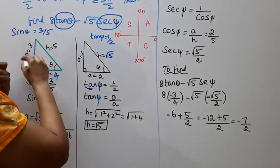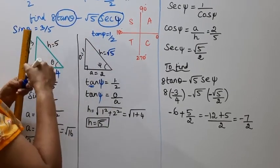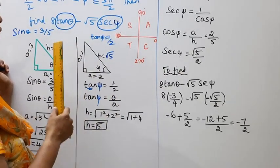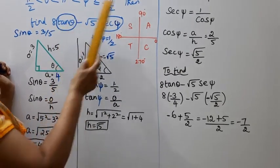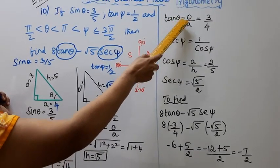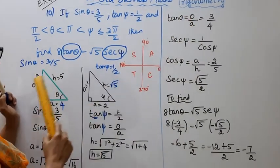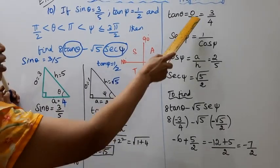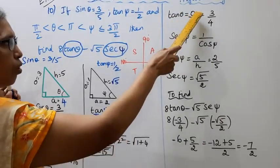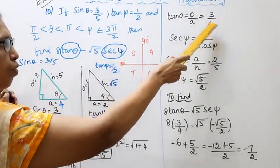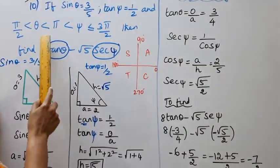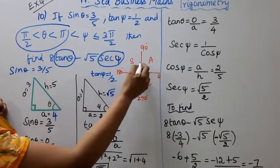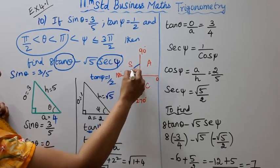Now finding the trigonometric ratios. tan θ = opposite by adjacent = 3 by 4. Since θ lies between 90° to 180° (second quadrant), tan θ is negative, so tan θ = minus 3 by 4.